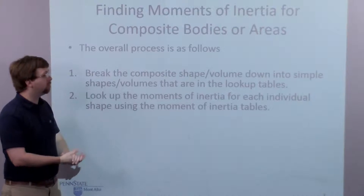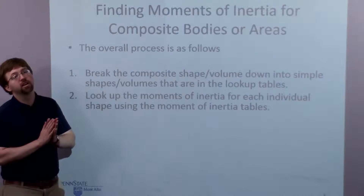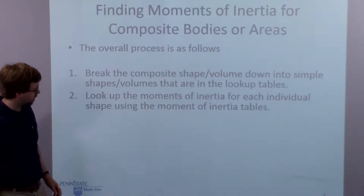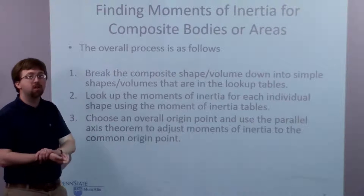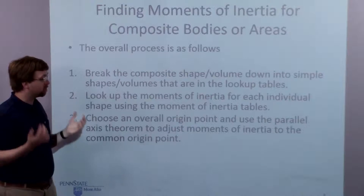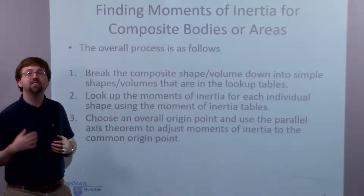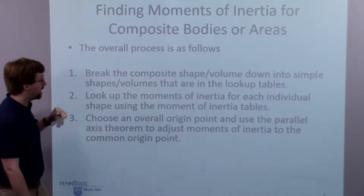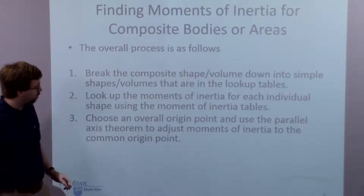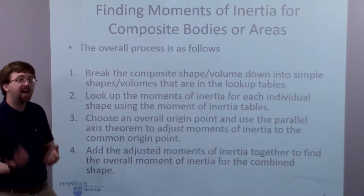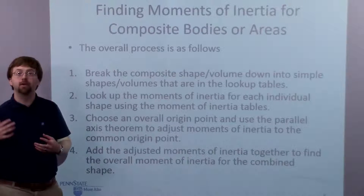Once we do that, we look up the moments of inertia for each individual shape using the moment of inertia tables, plugging in values like height, radius, distance, etc. After that, we choose some overall combined origin point to take the moment of inertia about. Since each individual part has its own origin point, we use the parallel axis theorem to adjust those origin points so they all line up to a single point. Once adjusted, we simply add the moments of inertia together — the sum of all the parts equals the moment of inertia of the whole body.